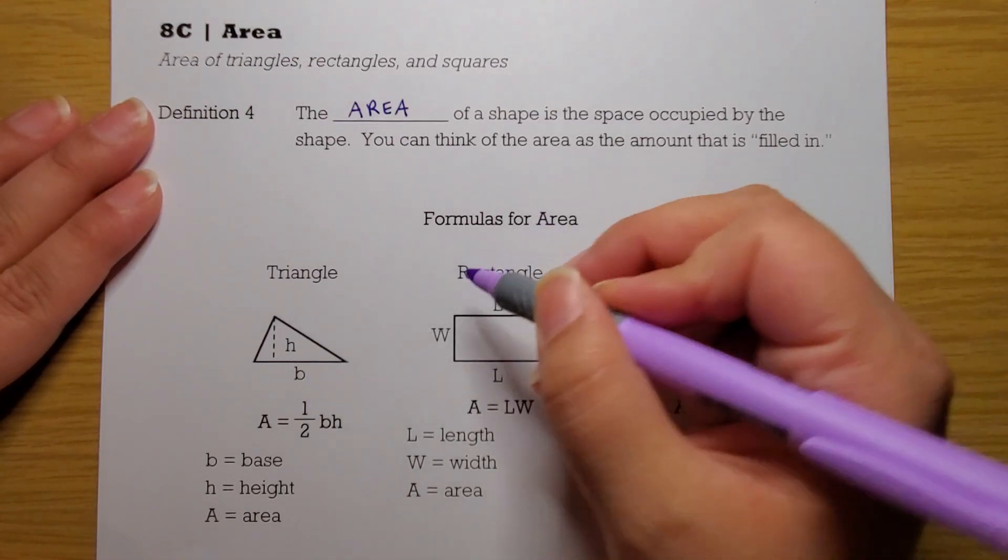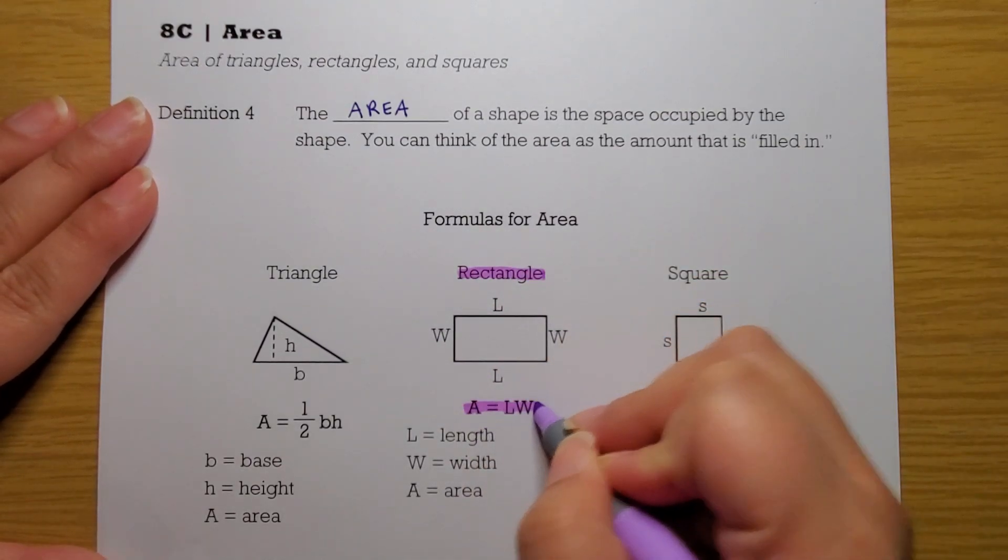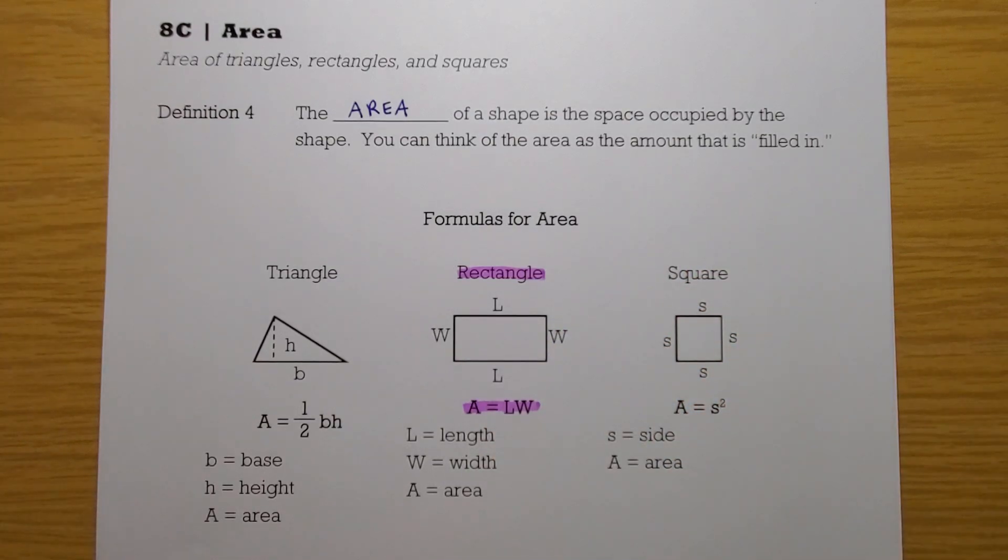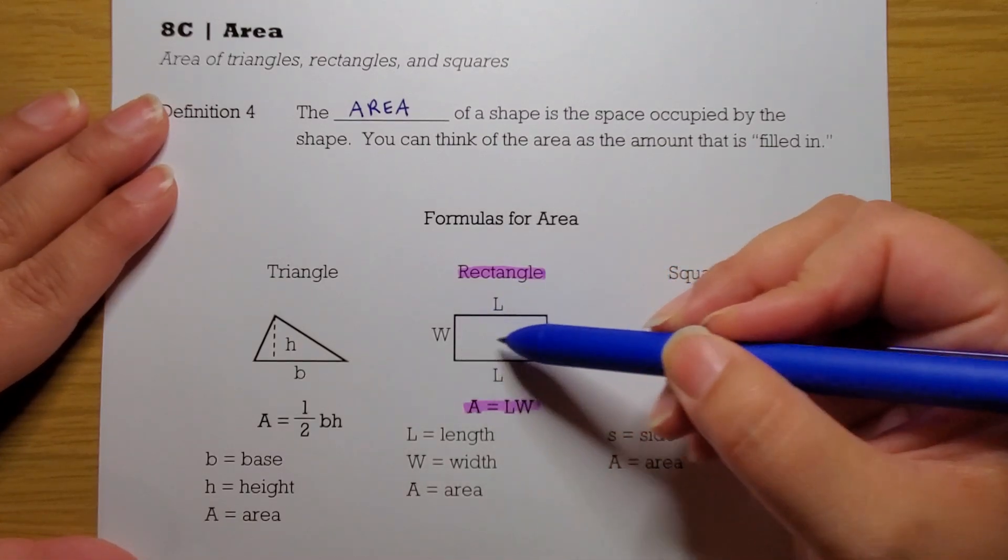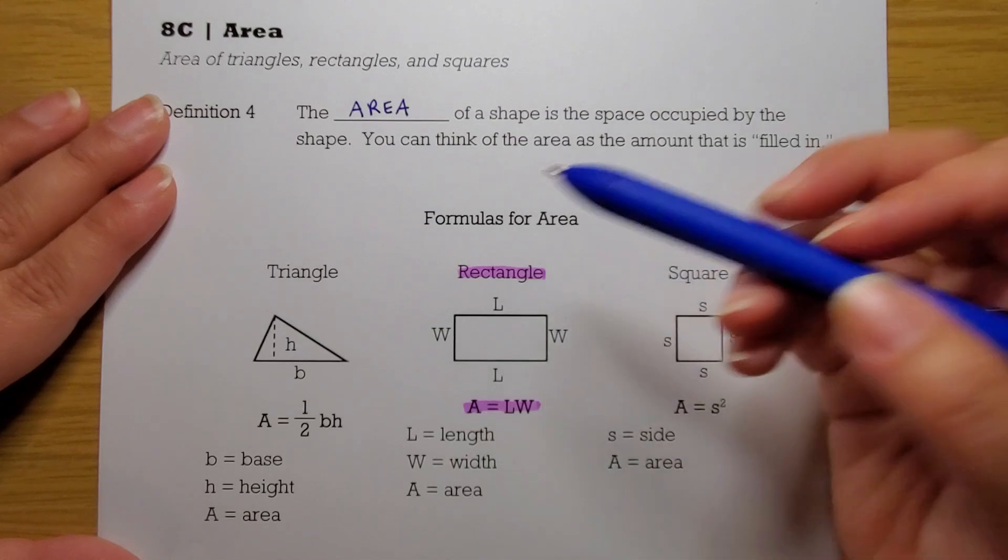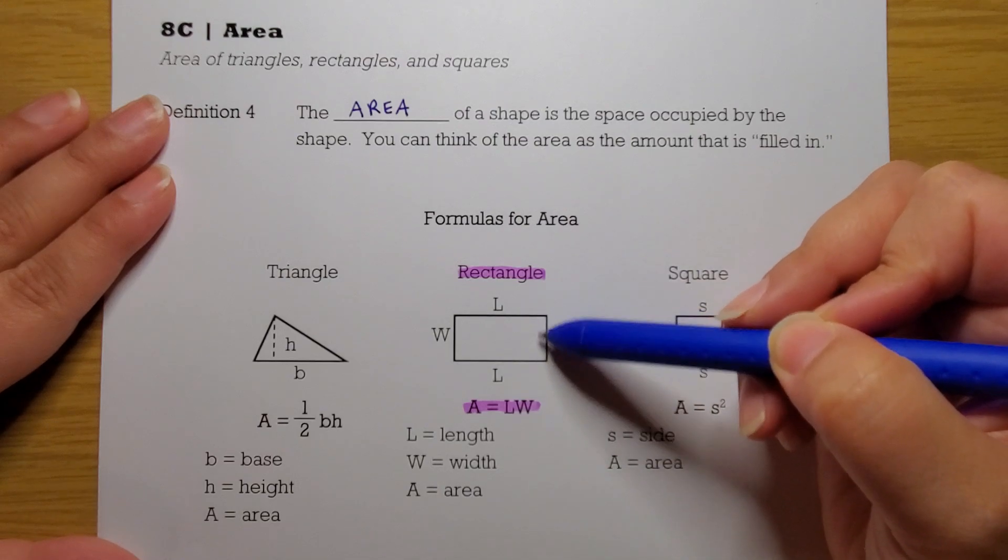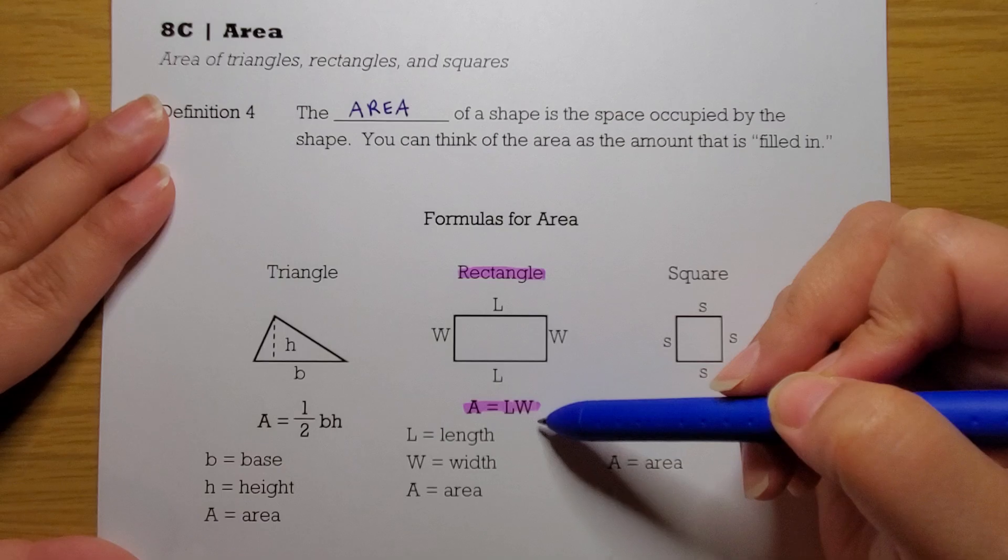I'm going to actually start with rectangles. The area for a rectangle is length times width. You could think of it like if you had little one-inch squares of paper, you could make a little grid to form the rectangle. To know how many little one-inch squares you would need, you would count how many across and how many going up, and then multiply them. That's where this formula is coming from.